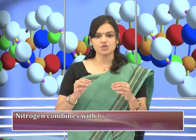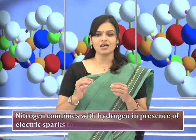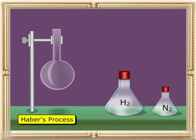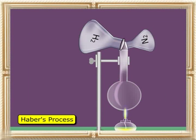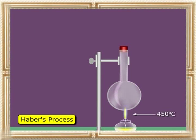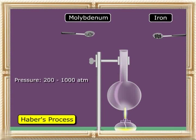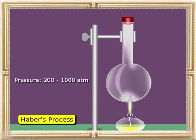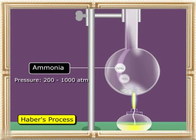Ammonia is obtained by Haber's process. In this process, nitrogen combines with hydrogen in presence of electric sparks to form ammonia. A 3 to 1 mixture by volume of hydrogen and nitrogen at about 450 degrees Celsius and a pressure of 200 to 1000 atmospheres, in the presence of finely divided iron as catalyst and molybdenum as a promoter is taken.